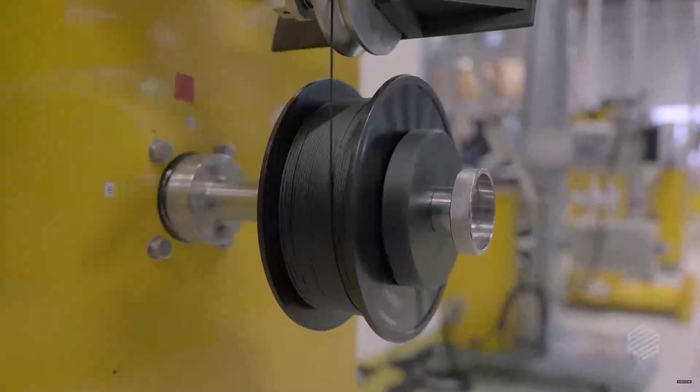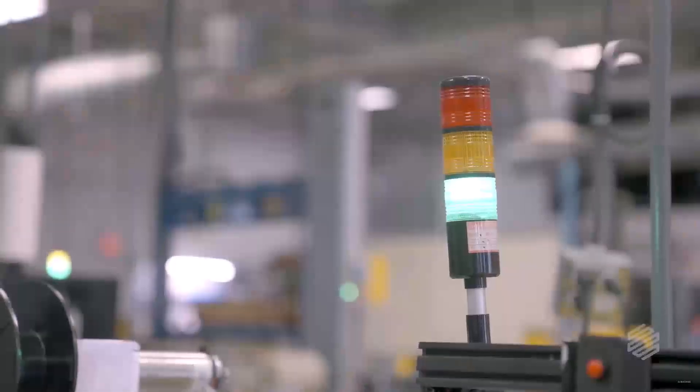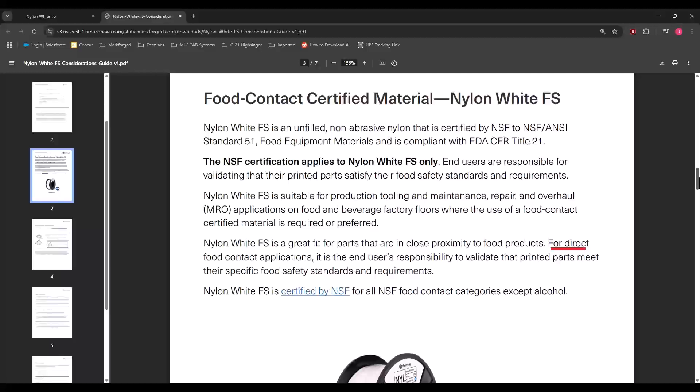Markforged has the ability to control manufacturing a material that is food-safe, but they can't control how the end-user manufactures with this material downstream. Therefore, for direct food contact applications, it is the end-user's responsibility to validate that printed parts meet their specific food safety standards and requirements.